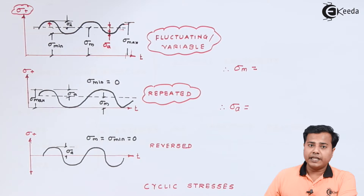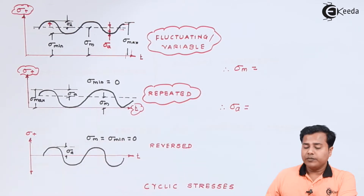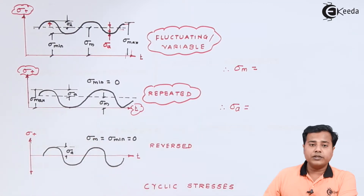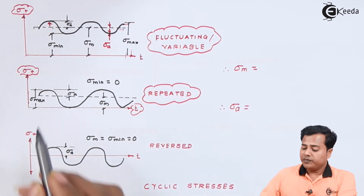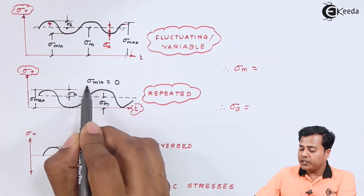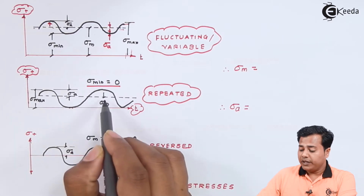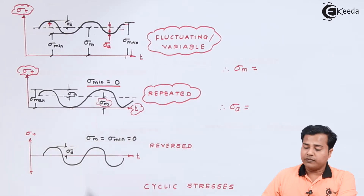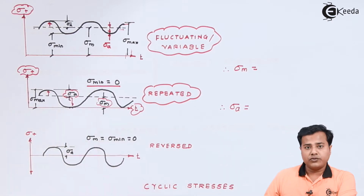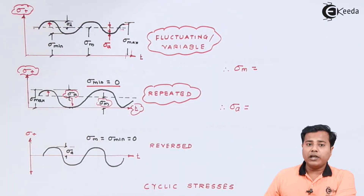For repeated stress, the plot is similar but the minimum value of stress is always zero and the maximum value is sigma maximum. Drawing a mean line through this sinusoidal wave gives the mean stress value, while the upper or lower deviation from the mean is the amplitude stress. The key difference in repeated load is that the minimum stress is zero.